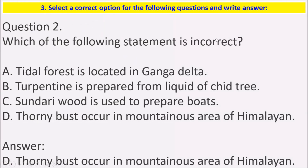Which of the following statements is incorrect? Tidal forest is located at Ganga delta. Turpentine is prepared from the liquid of chit trees. Sundri wood is used to make boards. Thorny bushes occur in mountainous areas of the Himalayas. The incorrect statement is: thorny bushes grow in mountainous areas of the Himalayas.